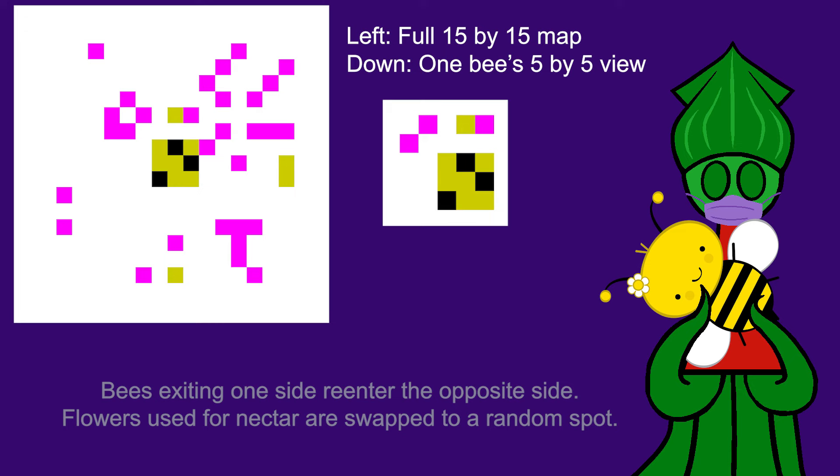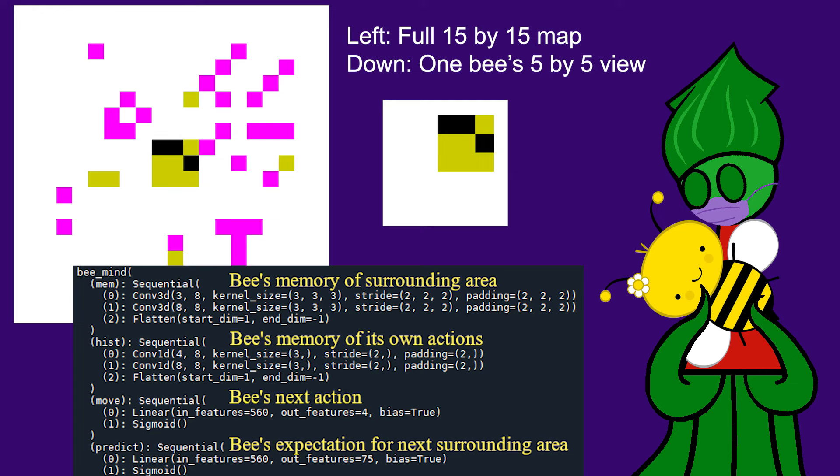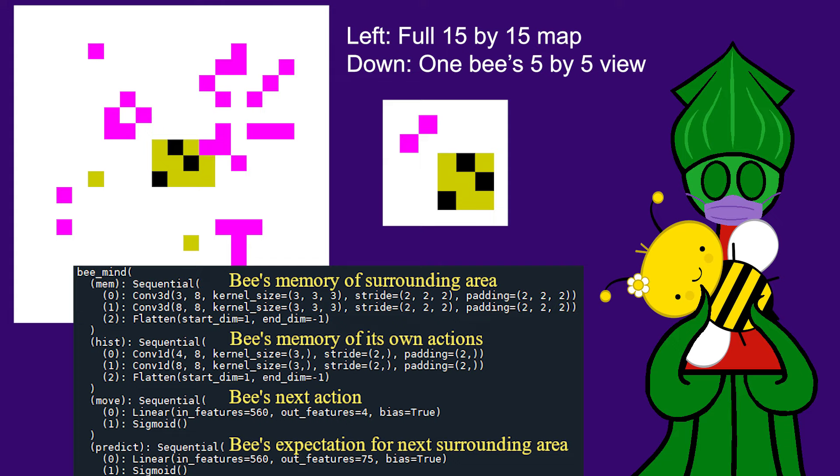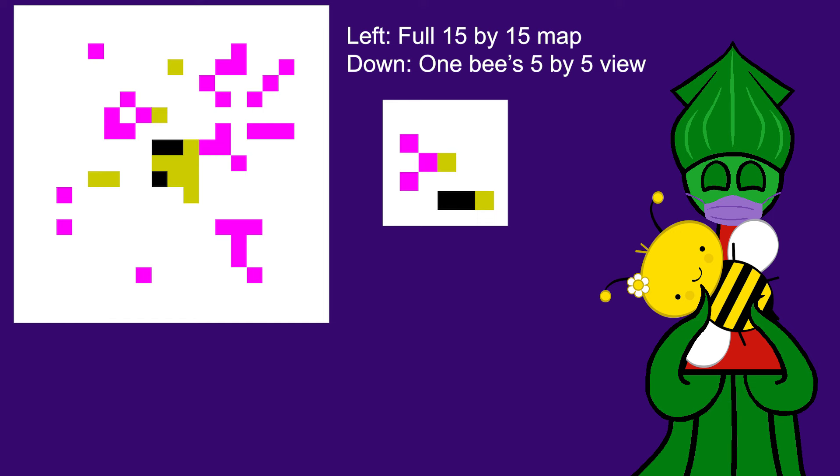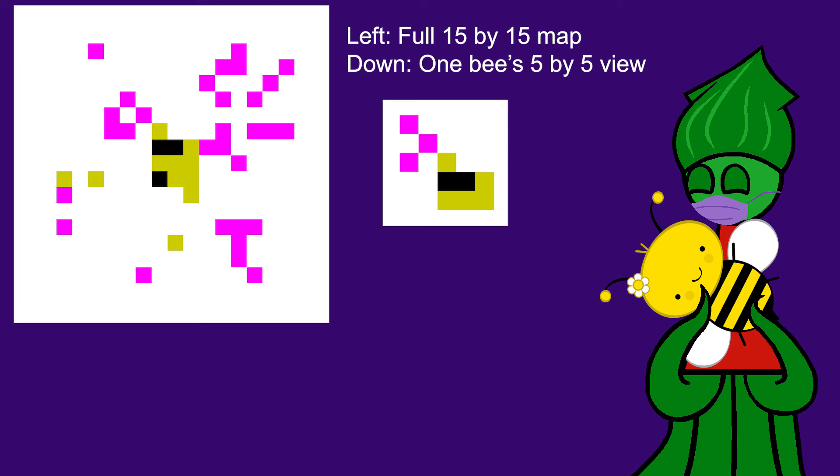But I'd like to attach each bee to a neural network, sort of like this one. Actions are chosen based on the bee's memory of the world around it and its own previous actions. If I ran a real simulation like this, I think the bees would just die. I'm not telling them to collect nectar and make more bees, so they'll probably wander aimlessly. But if I ran a thousand of these simulations, I bet a few of them would accidentally collect some nectar and start a new generation.